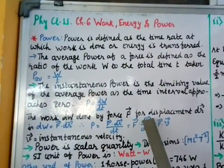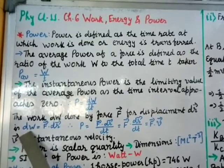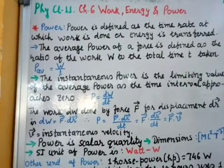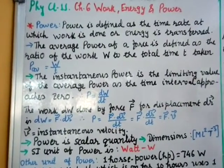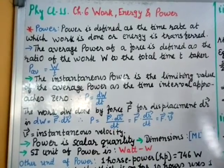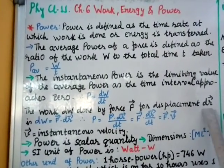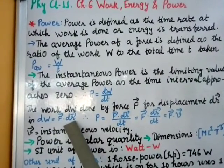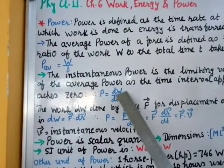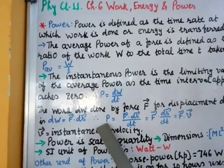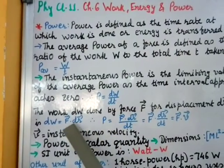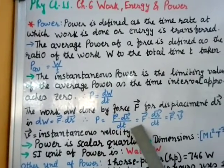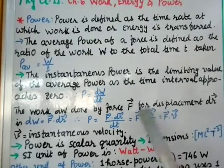The work dW done by force F for displacement dr is dW = vector F dot vector dr. Since force and displacement are both vectors, the work done is their dot product. Substituting into P = dW/dt, we get instantaneous power P equals vector F dot dr divided by dt.